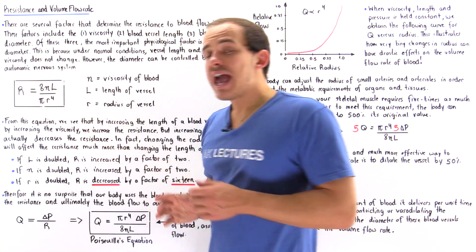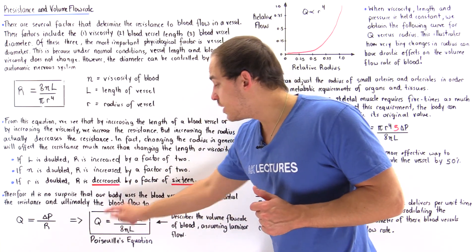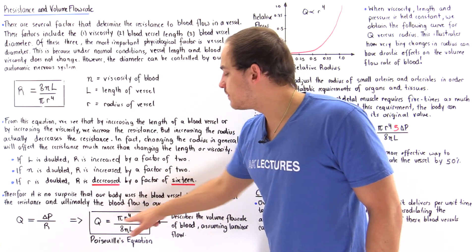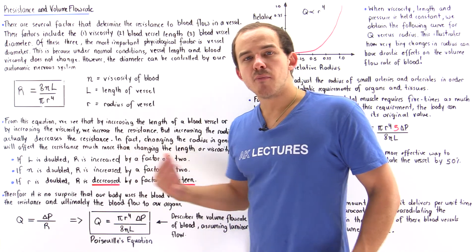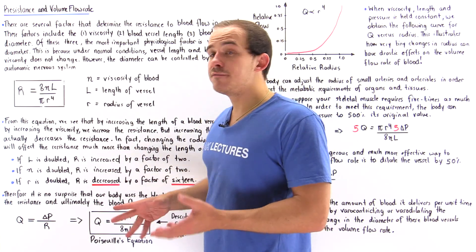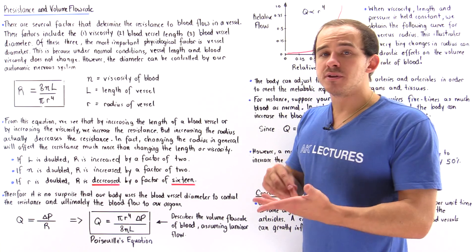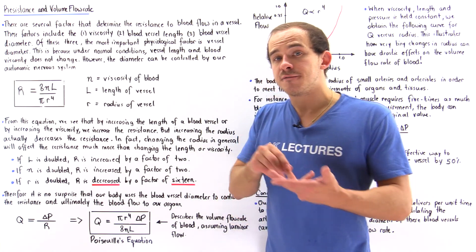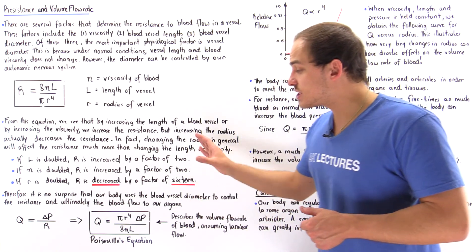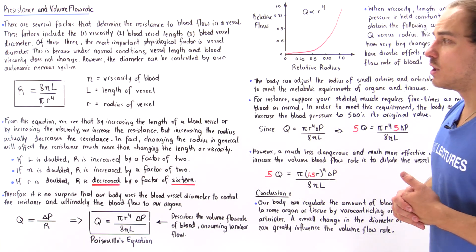If we take the flow rate equation and plug in for the resistance, we get the following: Q is equal to pi times radius to the power of 4, multiplied by the change in pressure, divided by 8 multiplied by the viscosity, multiplied by the length of that blood vessel. This equation in fluid dynamics is known as Poiseuille's equation. As long as we assume that the blood is incompressible and that the blood is flowing in laminar or streamlined flow, we can use this equation to study the way blood flows inside our blood vessels.